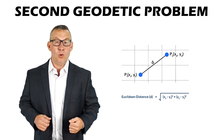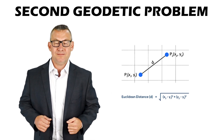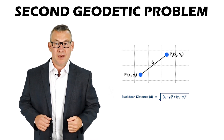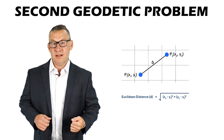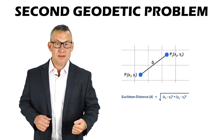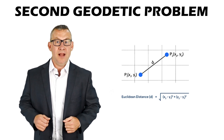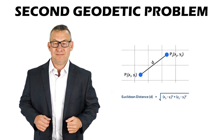The second, or inverse, geodetic problem: given the coordinates of two points, determine the azimuth and the length of the line that connects them.